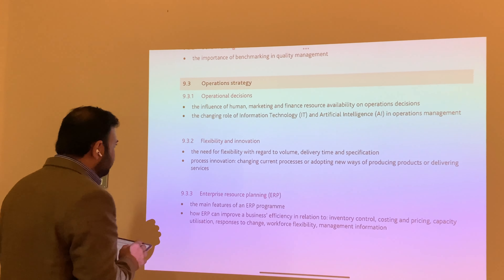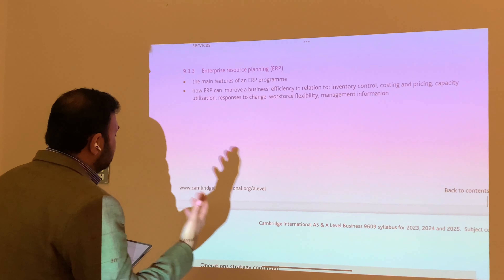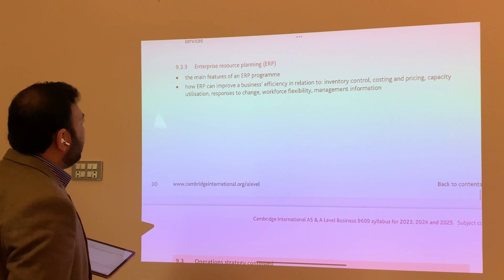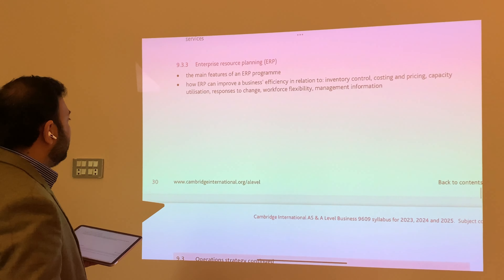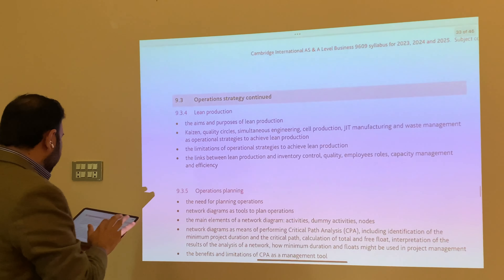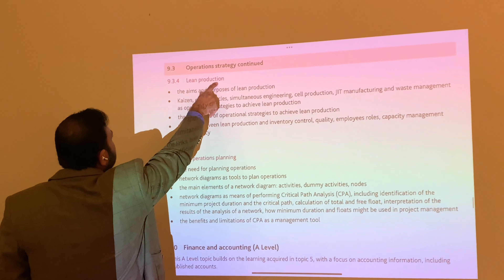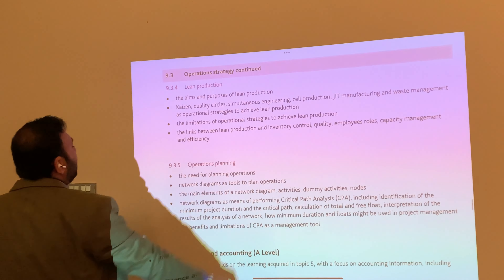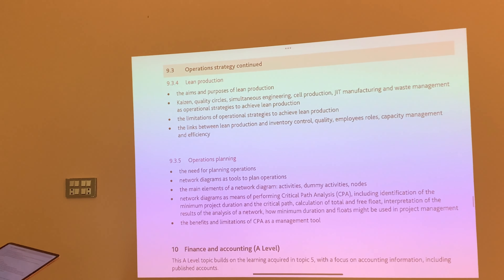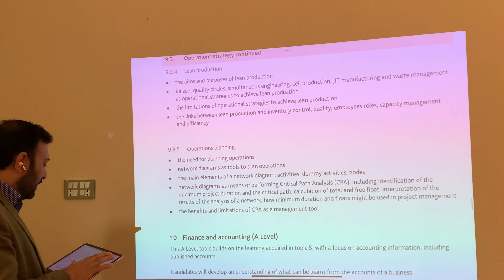Flexibility and innovation — we have been already teaching that. Enterprise resource planning is a topic that has been repeatedly asked since the last two years and has become one of the examiner's most favorite topics; it is now listed as 9.3.3. Lean production has been separately made a topic now as 9.3.4 under operations strategy. The aims and purpose of lean production, Kaizen, quality circles, cell production, JIT, waste management, and the limitations of lean production — these have been separated from quality management now.